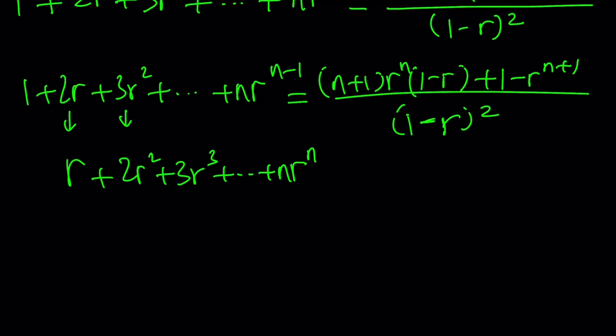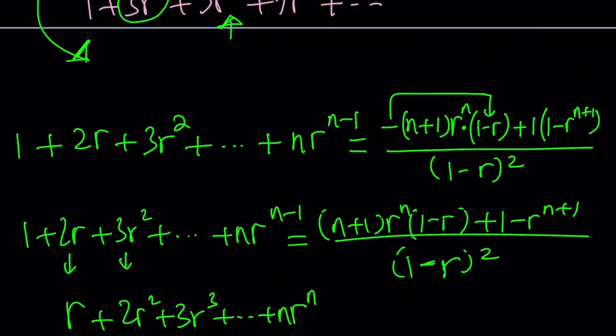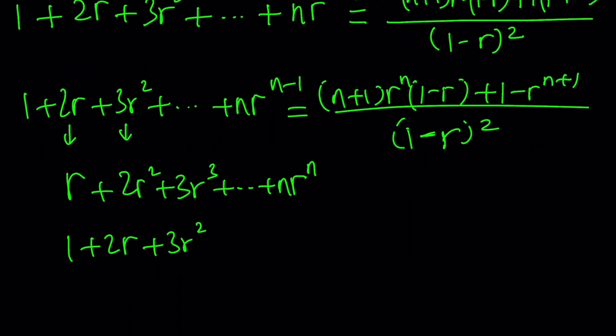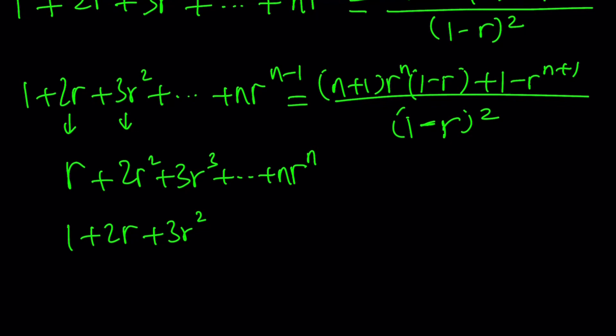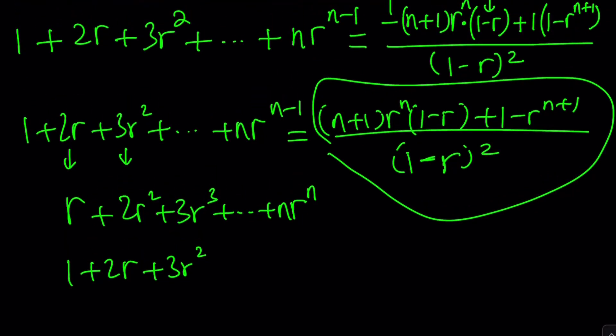We need to take this 1 plus 2r plus 3r squared—remember the expression that we got? We've got to multiply it by r. Sorry about the bad news, but we're going to take this expression, multiply by r, and add it to this.